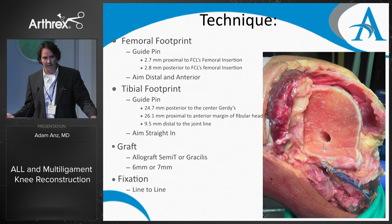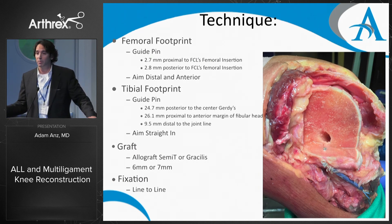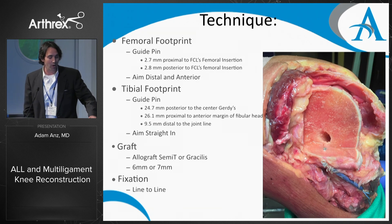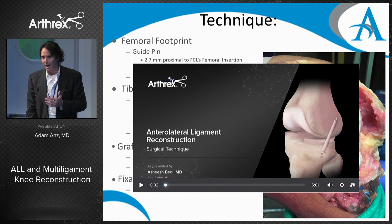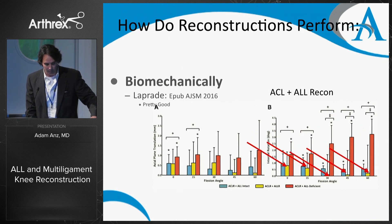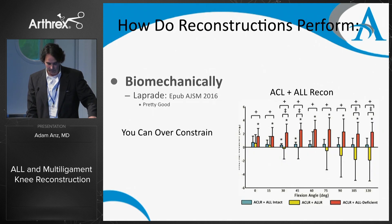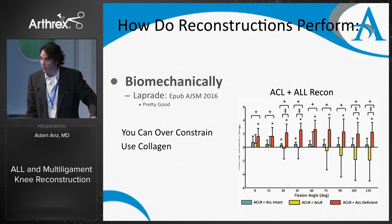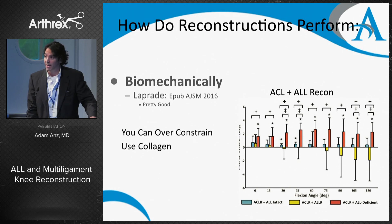In terms of technique, there are many resources on the Arthrex website. A key pointer is to always think about how you're aiming on the femoral side so you don't converge with your femoral tunnel of your ACL. Biomechanically, these reconstructions have performed well. The Veil robot showed ACL with ALL reconstruction reestablished normal kinematics for anterolateral instability. They conclude you should tension at 30 degrees, and you can over-constrain — so I recommend using collagen instead of any synthetic fibers laterally.